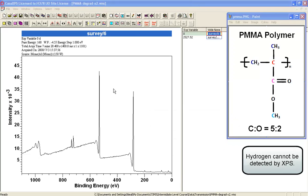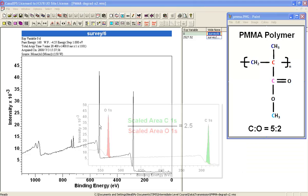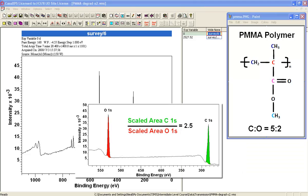In terms of quantification from XPS, when we measure the peak area for oxygen and carbon, if we scale them appropriately using relative sensitivity factors, escape depth correction, and transmission correction, we should get the ratio of five to two.